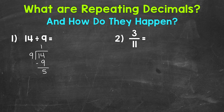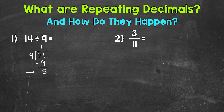Now we want to keep this in decimal form, so we need to continue on with our division process. The goal is to get a clean cut zero here, and that's when our answer will terminate. But in the case of this problem, it's going to be a repeating decimal. So let's look for a pattern here.